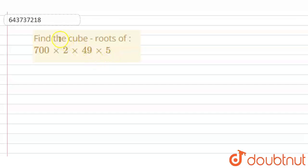So the question says find the cube roots of 700 × 2 × 49 × 5. So we are concerned about finding the cube root of 700 × 2 × 49 × 5.